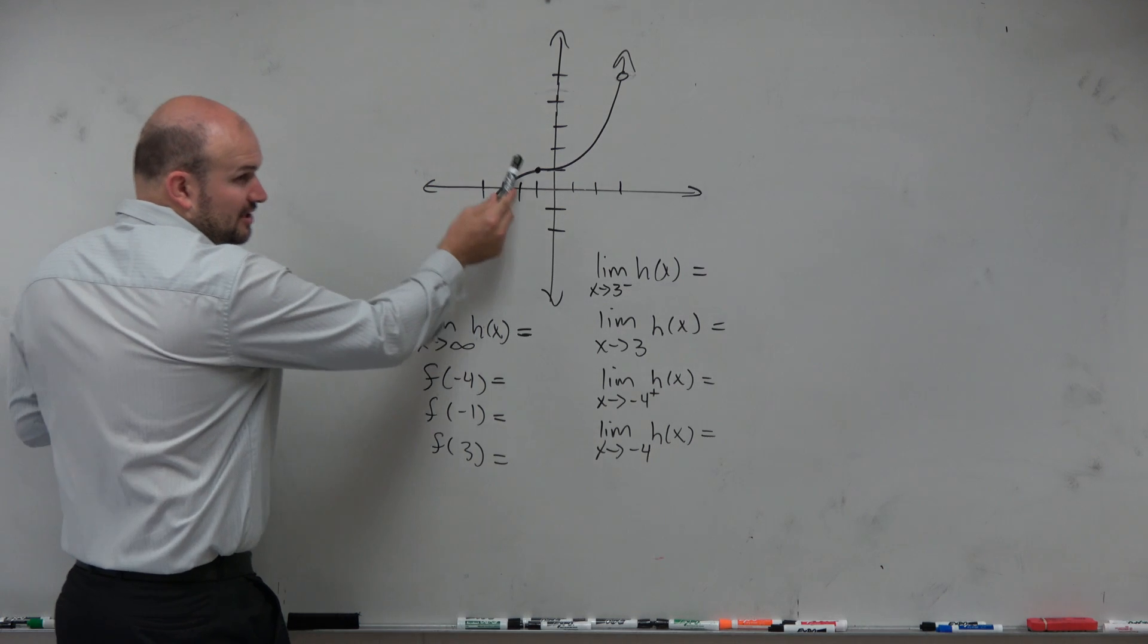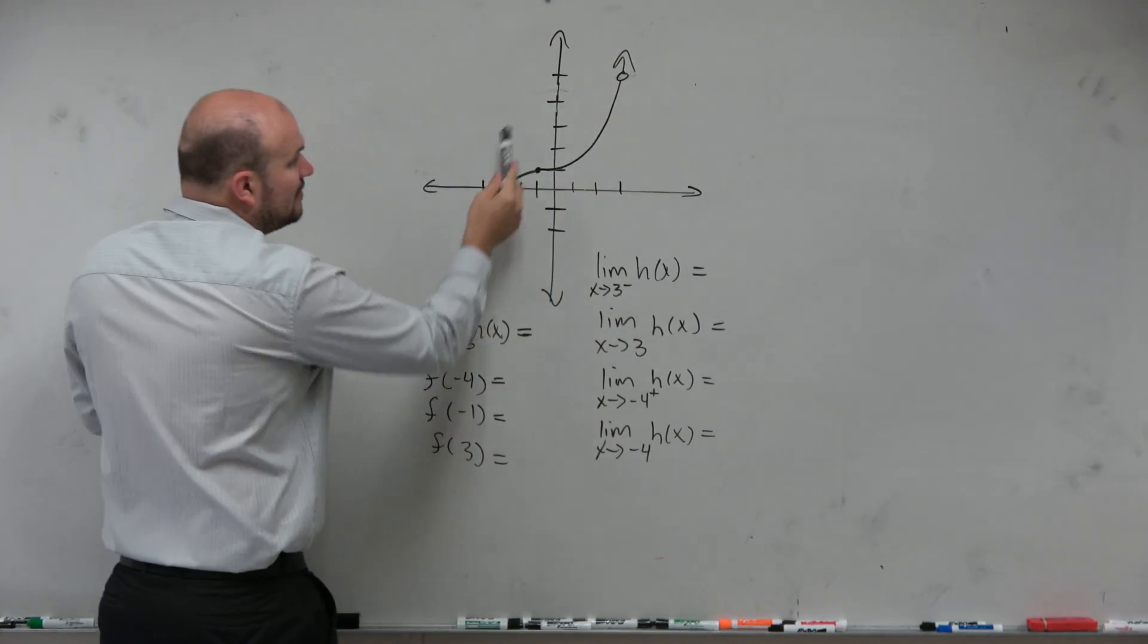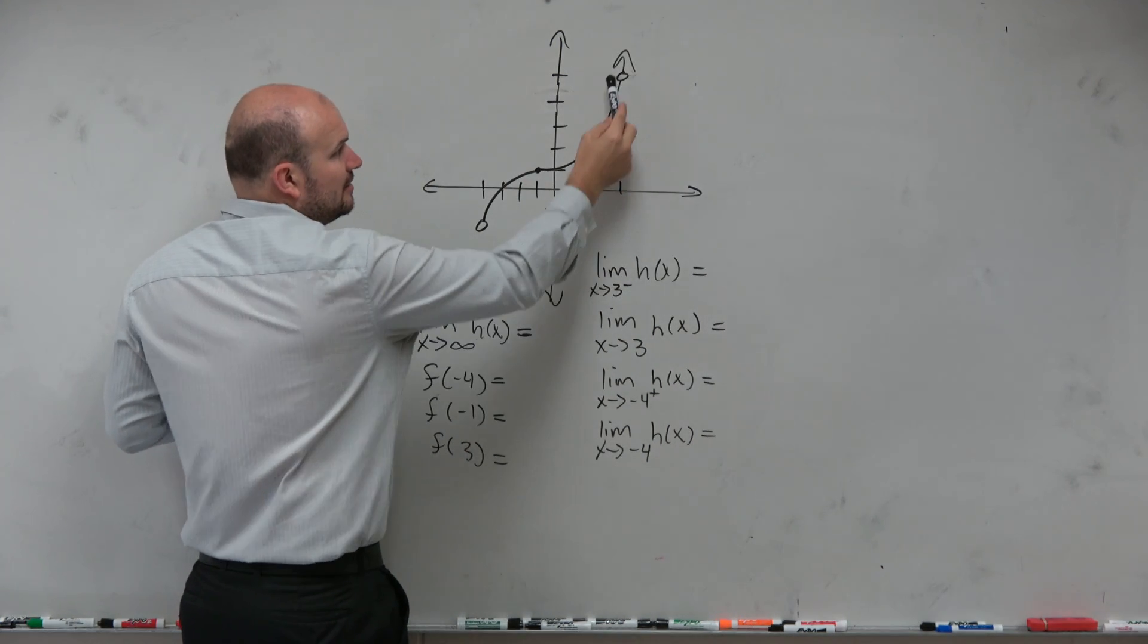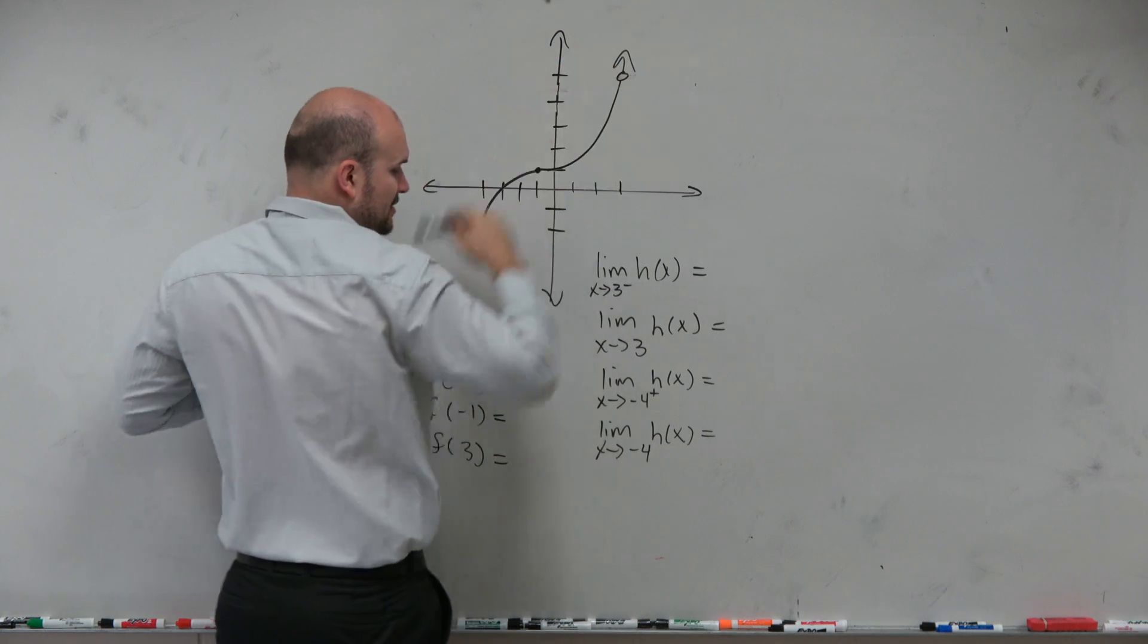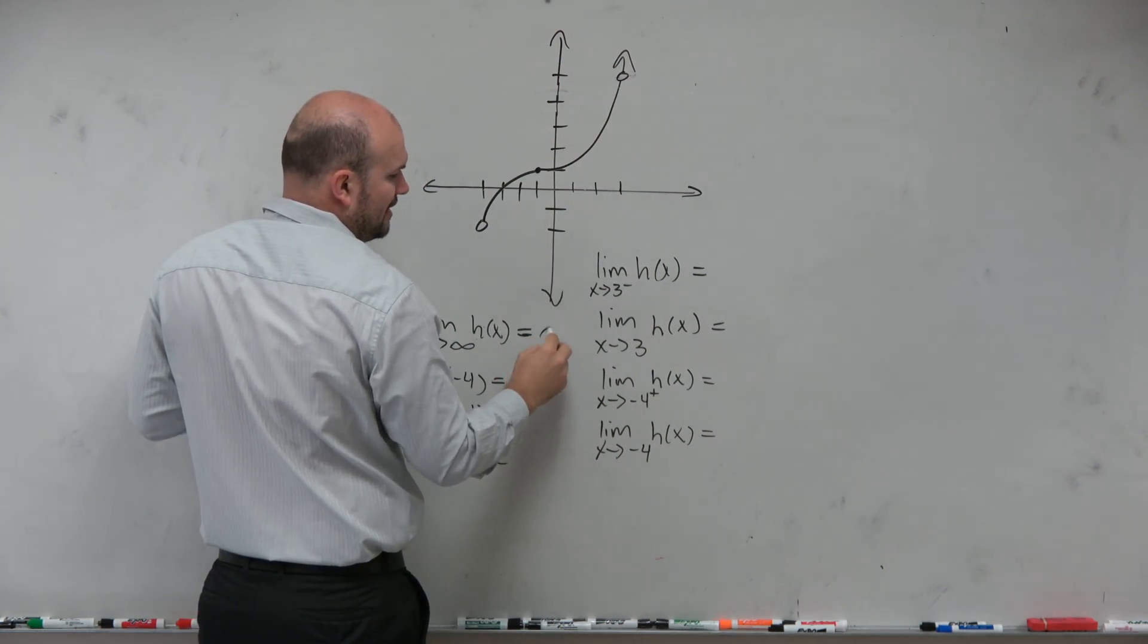Because as x approaches infinity, you guys can see that the graph is going all the way up to, forget about the holes. You have a hole, jump over it, and you continue going right. So you're going all the way up to infinity, right?